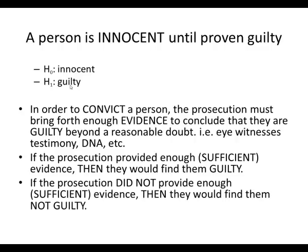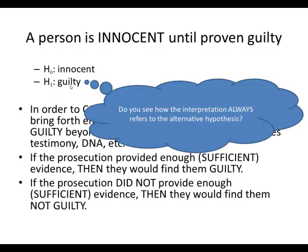If the prosecution does not have enough evidence, then we will find them not guilty, which for us means that we would fail to reject the null hypothesis. Do you see how this interpretation is always based on the alternative hypothesis? We either reject the null and say that we have enough evidence to say the person is guilty, or we fail to reject the null — we do not have enough evidence to say that they are guilty.